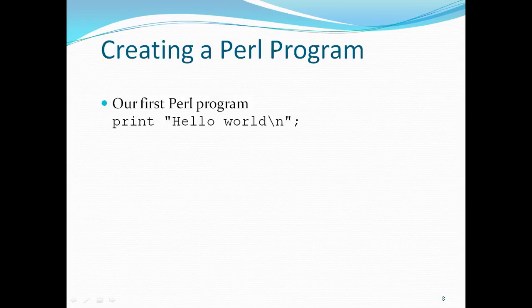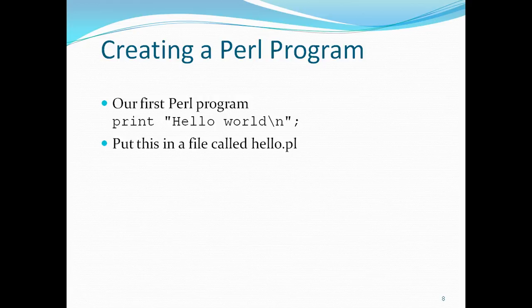The print command prints the statement onto the screen. You put 'hello world' in double quotes, with a backslash n for the new line, and end it with a semicolon.